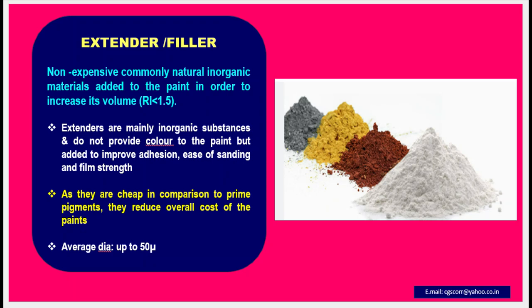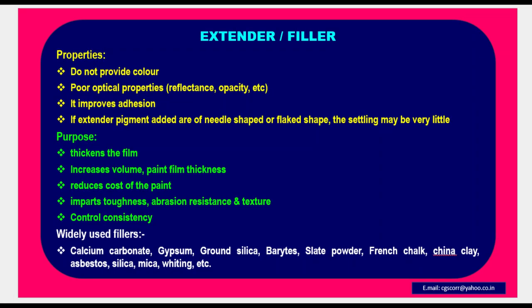Extender / Filler: Inexpensive, commonly natural inorganic materials added to the paint to increase its volume. Their refractive index is less than 1.5. Extenders are mainly inorganic substances and do not provide color to the paint, but are added to improve adhesion, ease of sanding, and film strength. As they are cheap in comparison to prime pigments, they reduce the overall cost of paints. Average diameter of particles is up to 50 microns. Extender fillers do not provide color and have poor optical properties such as reflectance and opacity. They improve adhesion, and if added in needle or flake shape, settling may be very little.